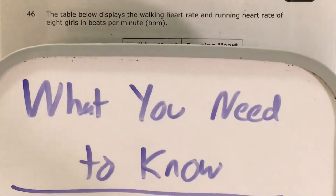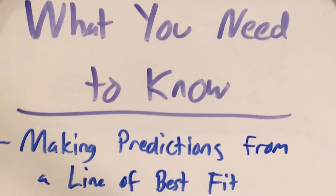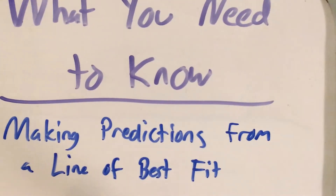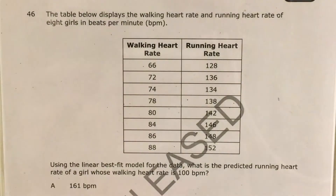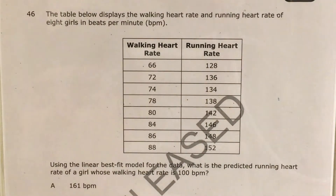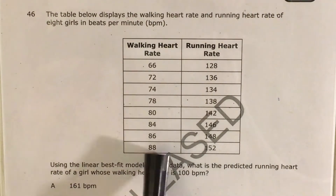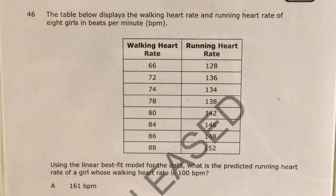So this question — the big skill that it deals with is making predictions from a line of best fit. We're going to have to take all this data, use it to find a line of best fit, and then see, based on that line of best fit, where a walking heart rate of 100 would fit in.